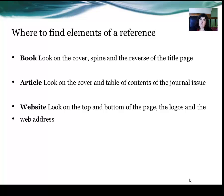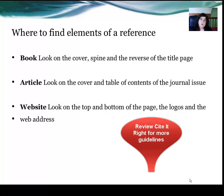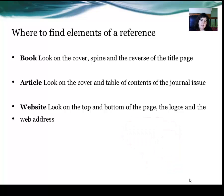Where do you find the elements of a reference? For a book, look on the cover, the spine, and the reverse of the title page — there you will find details about the publisher, where it was published, and what edition. For an article, look on the cover and table of contents of the journal issue. For a website, look on the top and bottom of the page, the logos, and the web address. More examples are given in Cite Right.